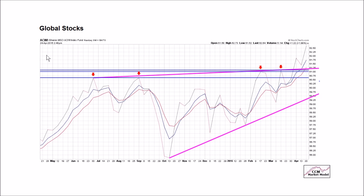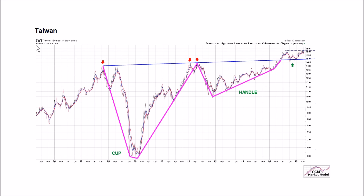This is the weekly ACWI ETF — a global ETF. We see resistance, resistance, resistance, resistance — then a bullish breakout, a full bore bullish look, and a new weekly closing high. Weekly EWT, Taiwan: we can make an argument for a bullish cup and handle formation. This was fear, and this is the last shakeout of fear — a bullish breakout above the rim. Previous resistance may now act as support, and we also made a new weekly closing high above this previous point of resistance.